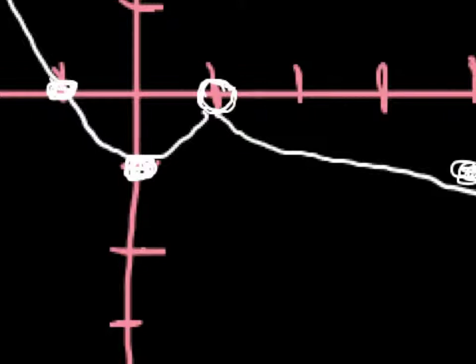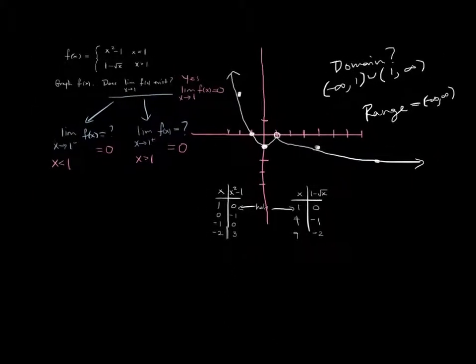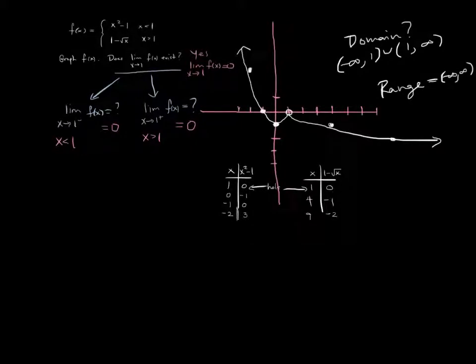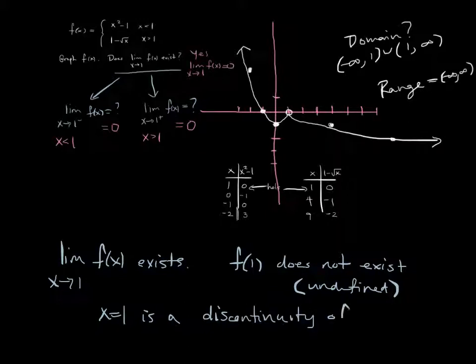Now, I mentioned in the other video the word continuity, continuous, and I'm going to do it here too, even though we haven't actually formally talked about it. I'm putting it in there because we will eventually talk about it. We would say here that limit as x goes to 1 of f of x exists, right? But f of 1 does not exist. In other words, it's undefined.